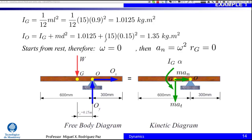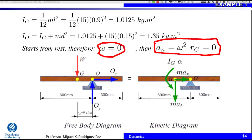Substituting the mass and length of this slender rod, we get this mass moment of inertia — please check the operations. Starting from rest means there was no angular velocity, so omega equals zero. Since the normal acceleration depends on omega squared, the normal acceleration is zero. In the free body diagram we have two reactions and the weight. In the kinetic diagram we have the inertial couple I_G · alpha and the components of normal and tangential acceleration times mass as inertial forces — this is a diagram of inertial forces, not accelerations, which is why we include mass times acceleration.